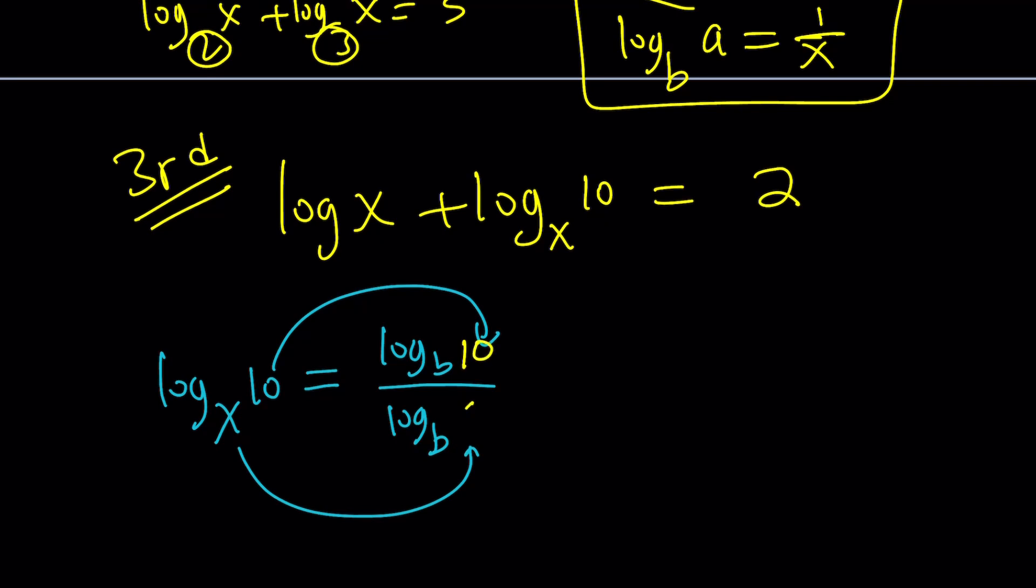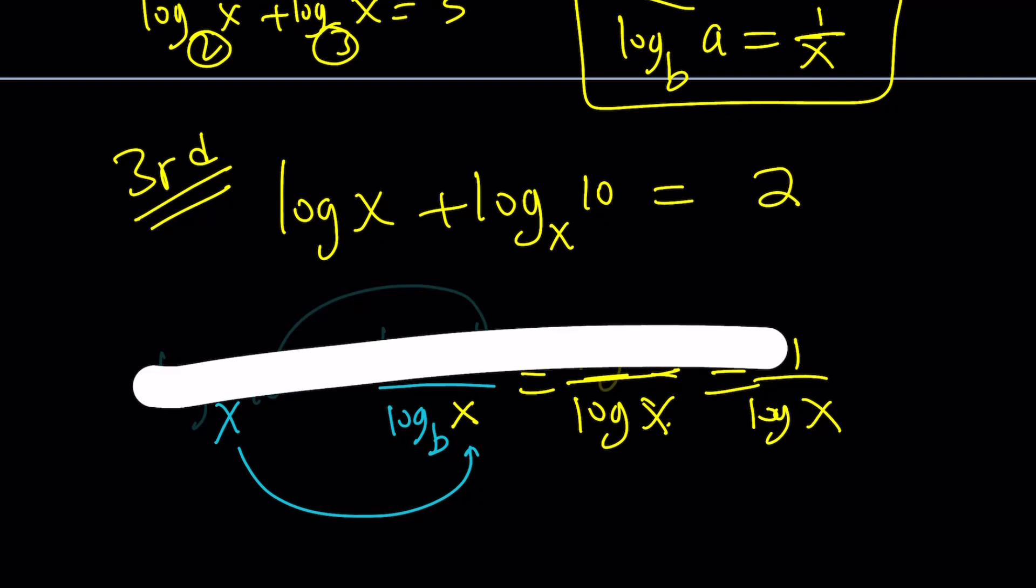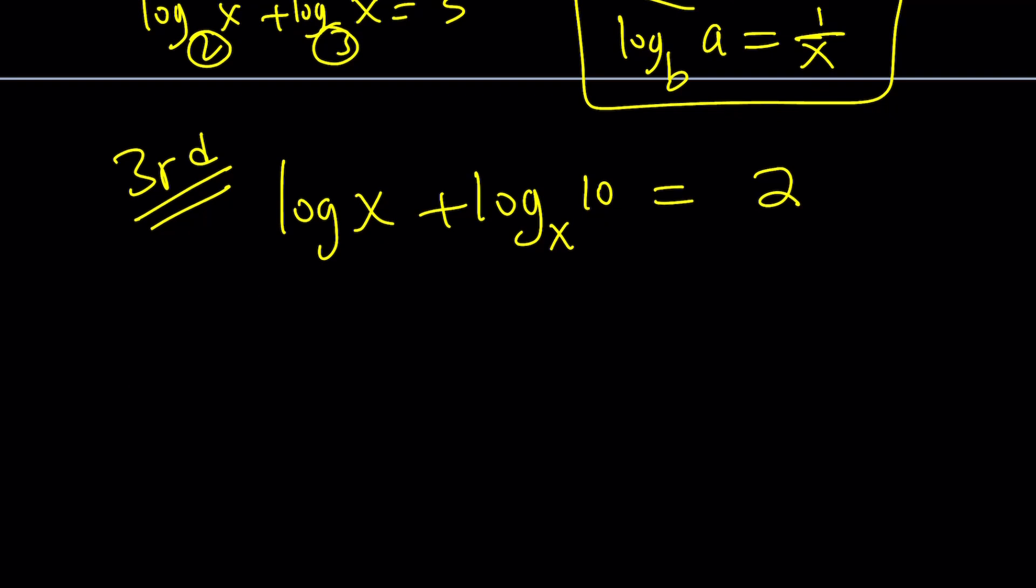We're going to write it this way. It's going to be log 10 over log x. But log 10 happens to be 1, so it should be 1 over log x. Awesome. This gives us a quick shortcut and basically tells us that these are actually reciprocals. So we can write this as log x plus 1 over log x equals 2. From here, you're going to find log x to be 1. That's the only solution.